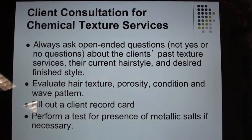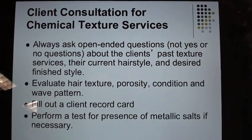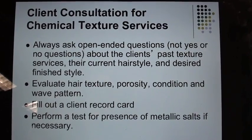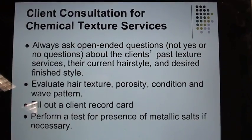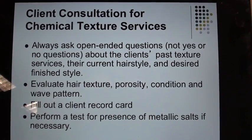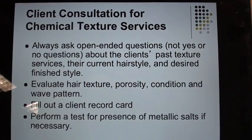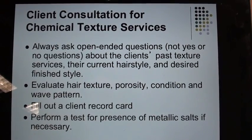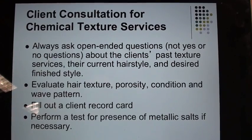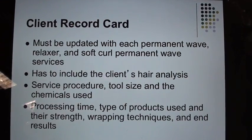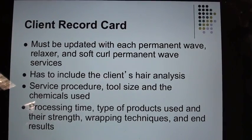Client consultation for chemical texture services: Always ask open-ended questions — not yes or no questions — about the client's past texture services, current hairstyle, and desired finish style. Evaluate hair texture, porosity, condition, and wave pattern. Fill out a client record card. Perform a test for presence of metallic salts if necessary. The client record card must be updated with each permanent wave, relaxer, and soft curl permanent wave service.